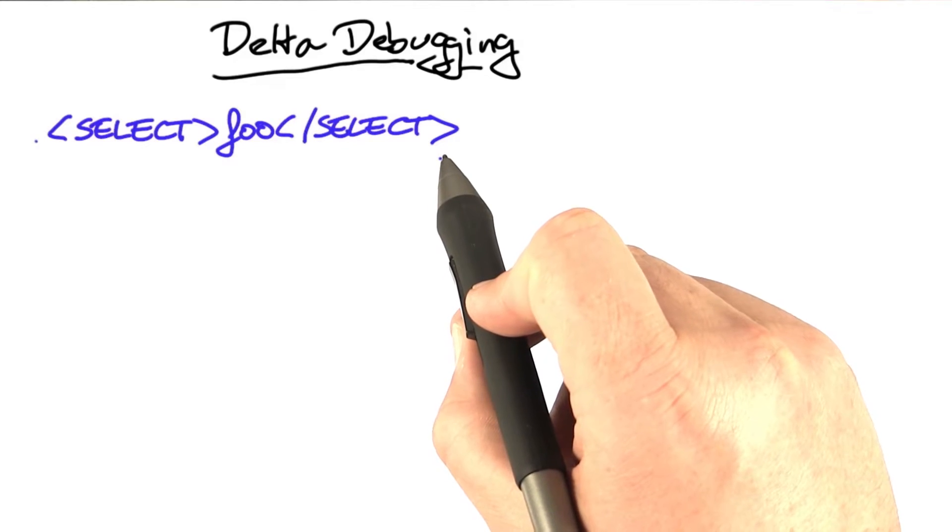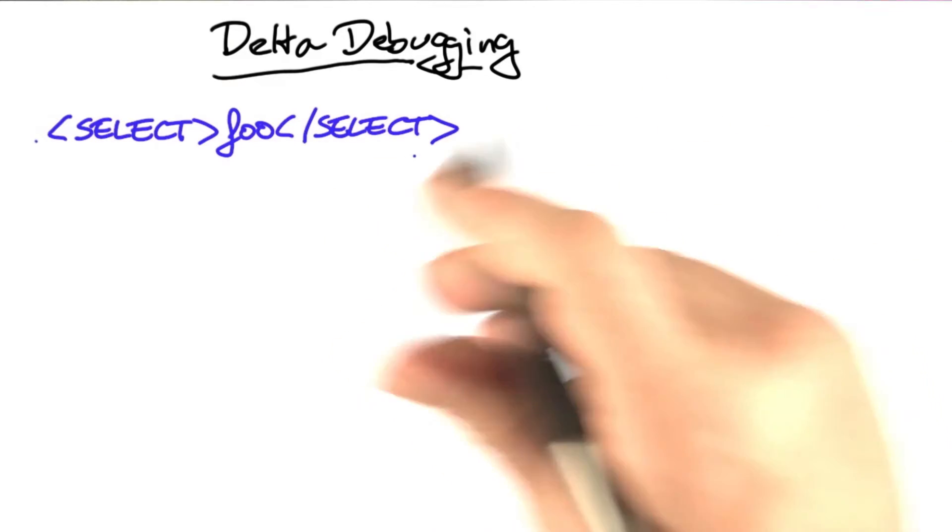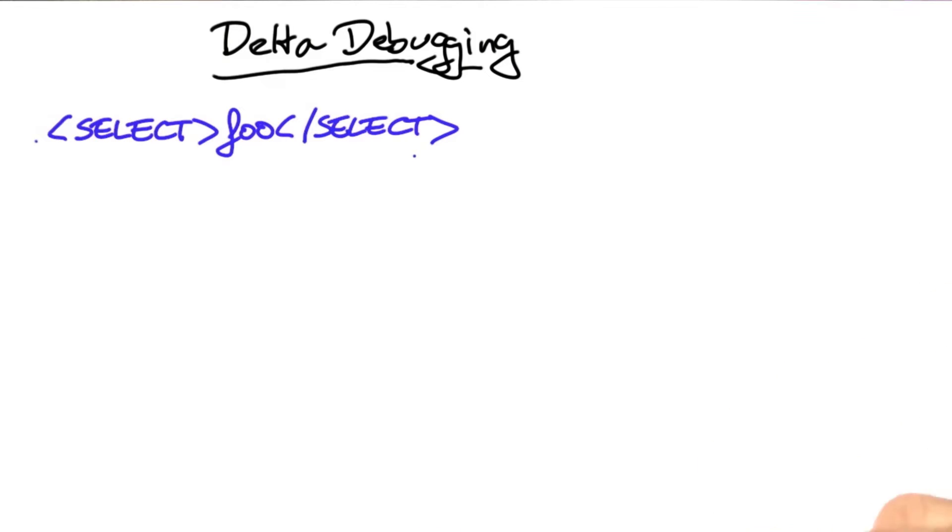So let's illustrate once more what happens if we take this HTML string and put this through our binary search simplification process.